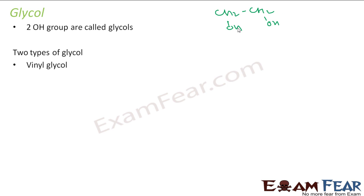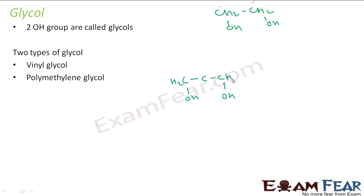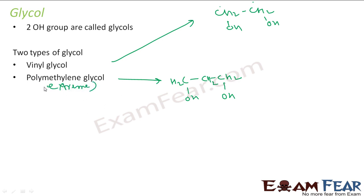There are two types of glycols. One is vinyl glycol, where the OH groups are attached to adjacent carbons. For example, the two carbons are adjacent and the OH groups are attached to them. The next is polymethylene glycol, where the OH groups are attached at the extreme ends — for example, trimethylene glycol.